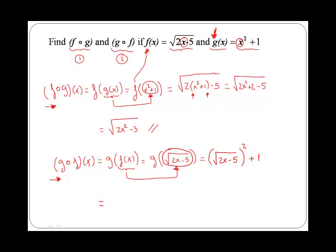Remember, the square root is squared cancels each other, so we have only 2x minus 5 plus 1. If we join the minus 5 and the 1, that gives us 2x minus 4. 2x minus 4 is just g composed with f of x.